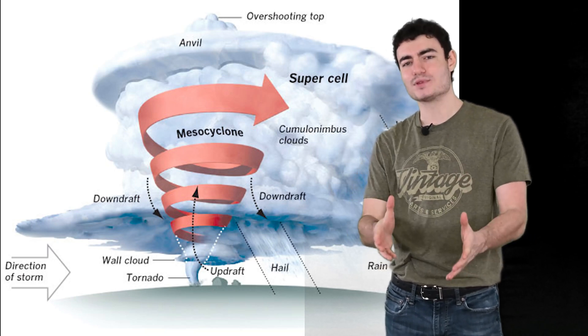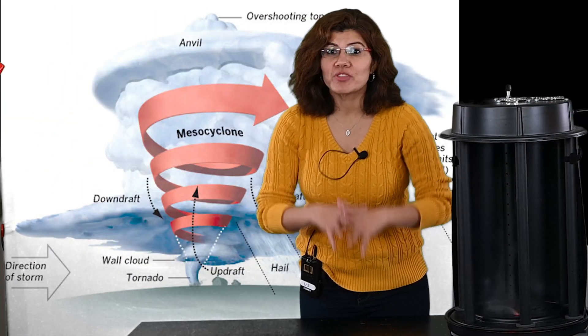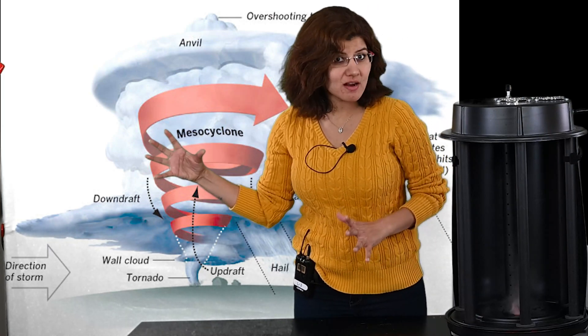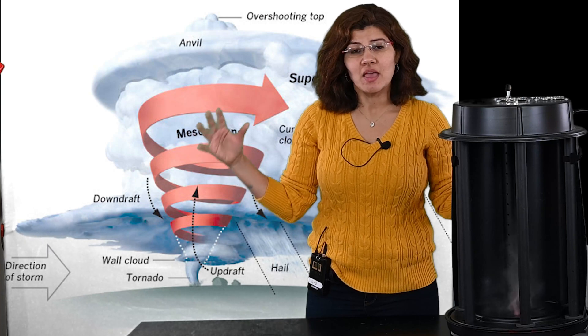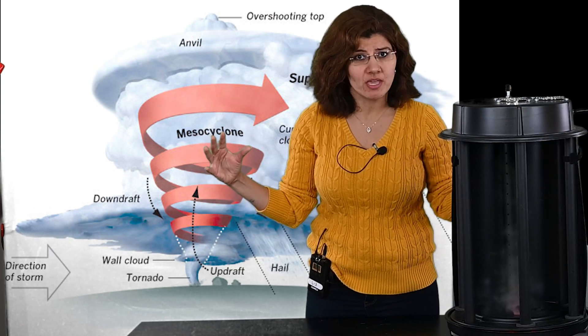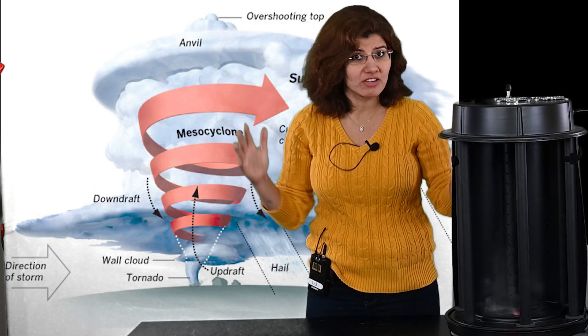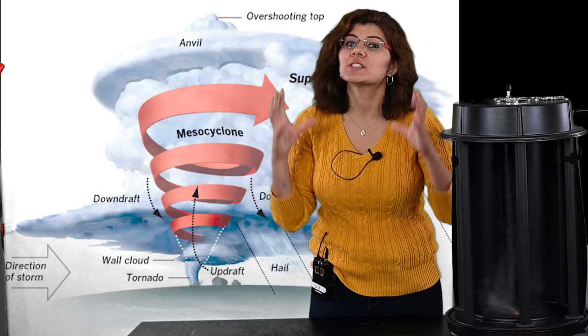But what exactly happens inside the storm? Inside that storm, there are two different kinds of air masses. Warm, humid air and cold, dry air. Because cold air is heavier than warm air, it slides down and pushes the warm air up really fast. And that creates a spinning current.